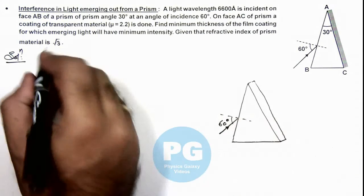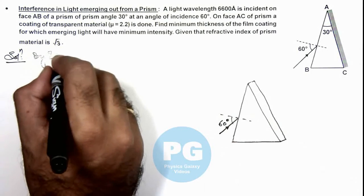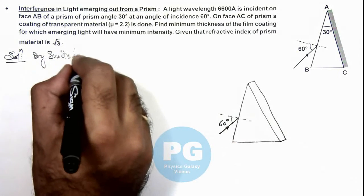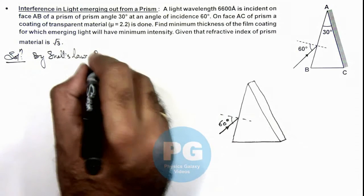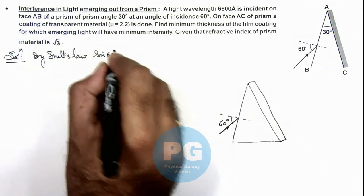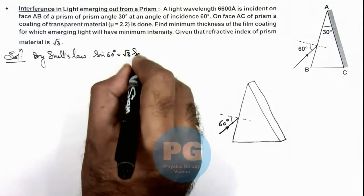Here we can calculate by Snell's law. If we use sine 60 degree equals the refractive index root 3 times sine r.